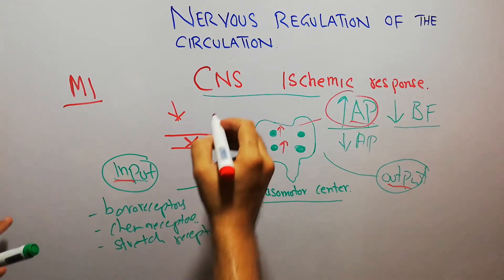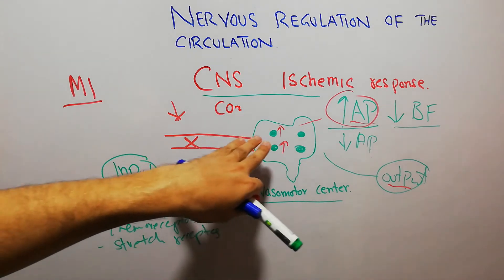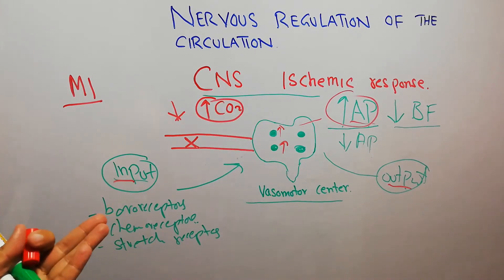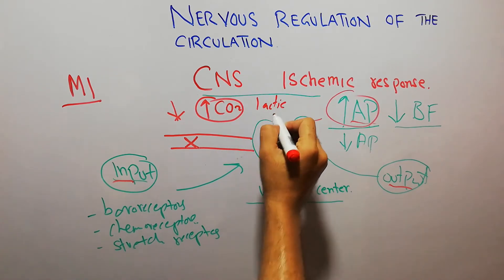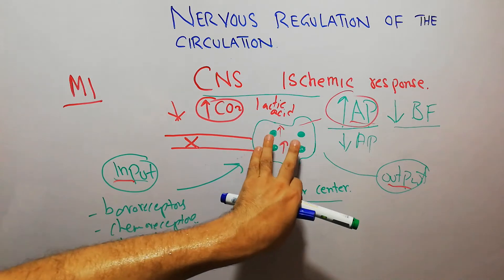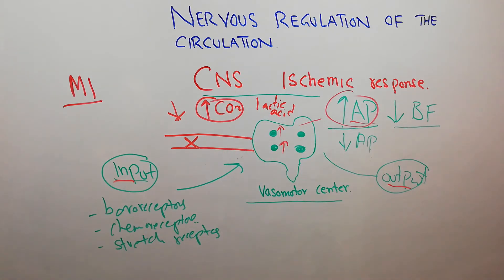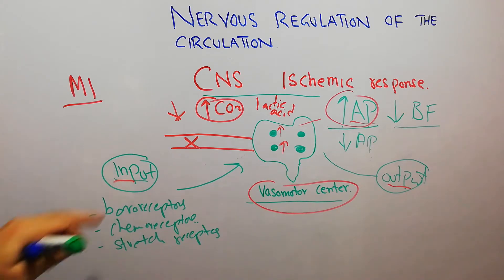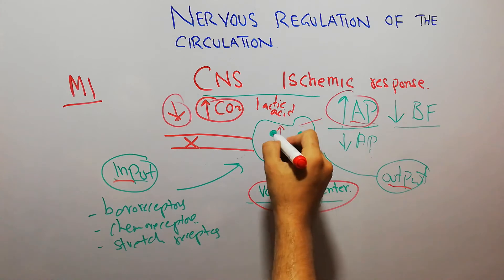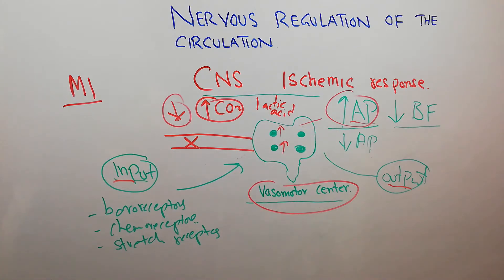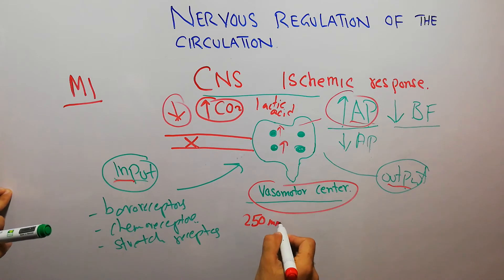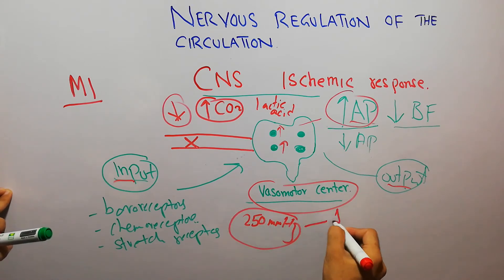The vasomotor center detects decreased blood flow by sensing rising levels of carbon dioxide and lactic acid. When blood flow is reduced, carbon dioxide and lactic acid accumulate in the vasomotor center, signaling ischemia. This causes extreme stimulation of the vasoconstrictor and vasodilator areas, powerfully increasing arterial pressure — sometimes up to 250 mmHg — and maintaining it for up to about 10 minutes.